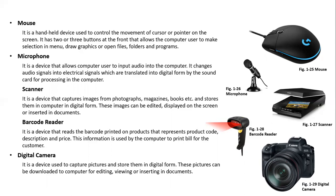Barcode Reader. It is a device that reads the barcode printed on products that represents the product code, description and its price. This information is used by the computer to print a bill for the customer. Digital Camera. It is a device used to capture pictures and store them in digital form. These pictures can be downloaded to a computer for editing, viewing or inserting in documents.